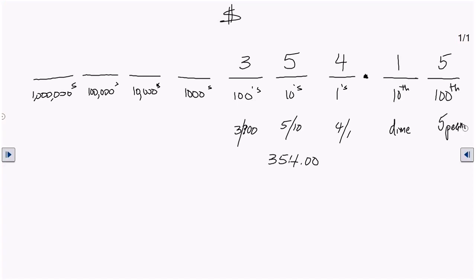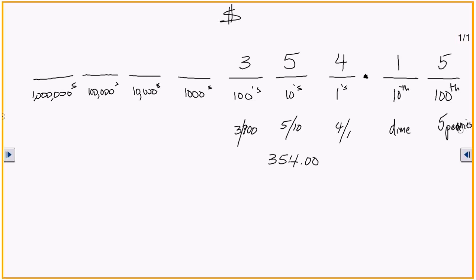So with this number right here I've got three hundred-dollar bills, five ten-dollar bills, four one-dollar bills, one dime, and five pennies. If you follow this same application of place value you should not have much trouble with adding and subtracting, because all you have to do is line up the place values. Let's look at another example.